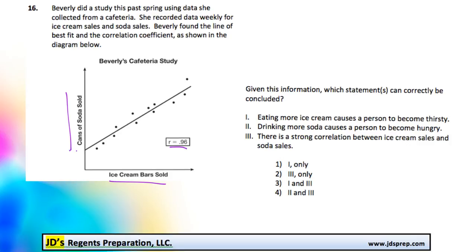Let's take a look at what we've got here. The first one, eating more ice cream causes a person to become thirsty. We can see in the data that as more ice cream bars are being sold, more cans of soda are being sold. They're both increasing at a similar rate.